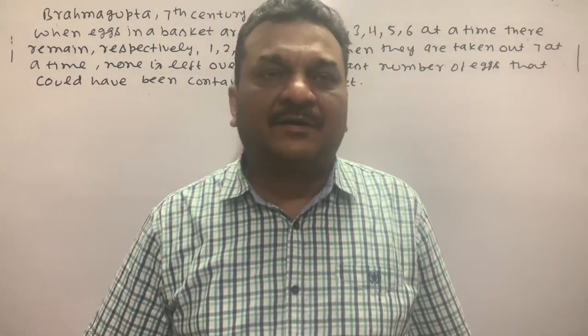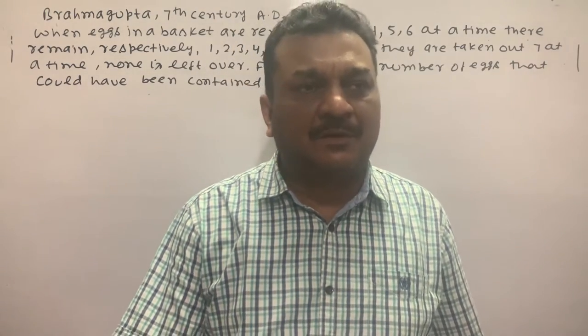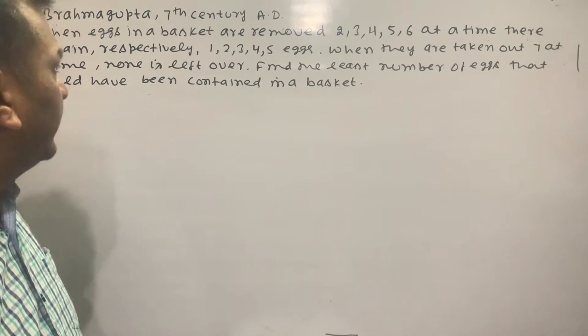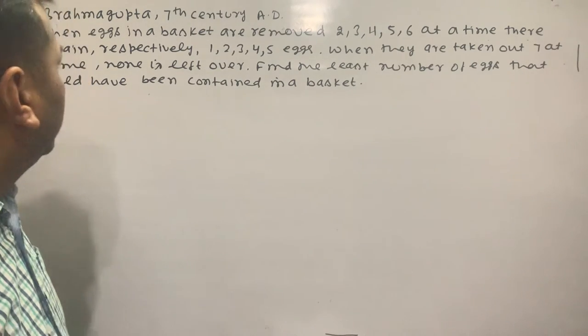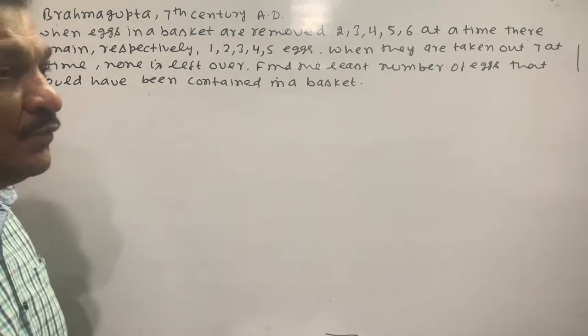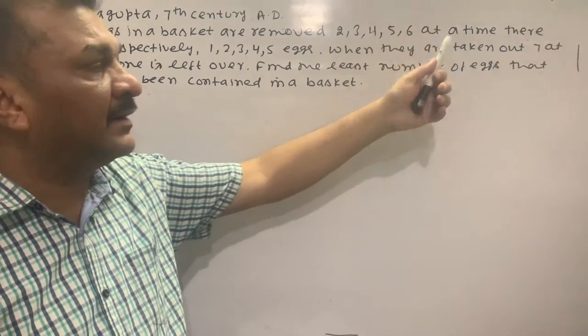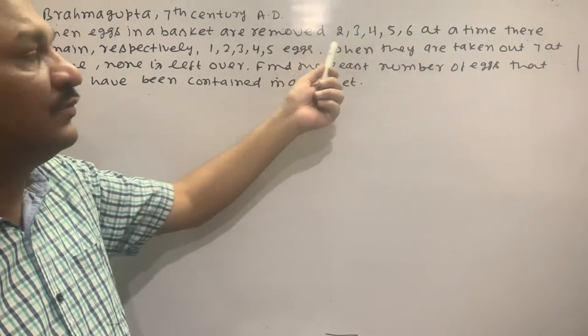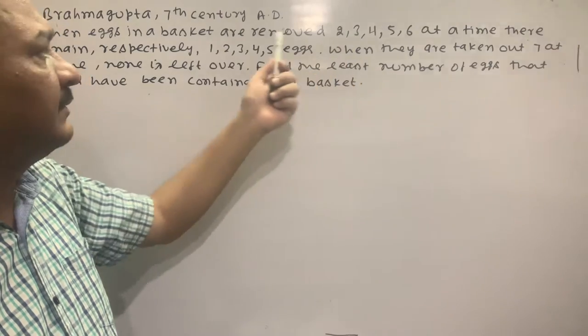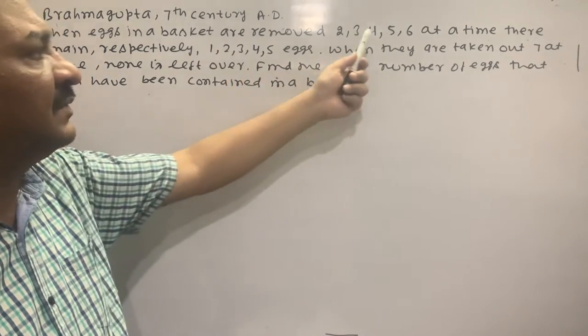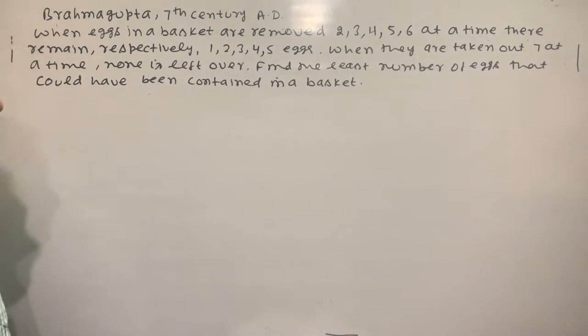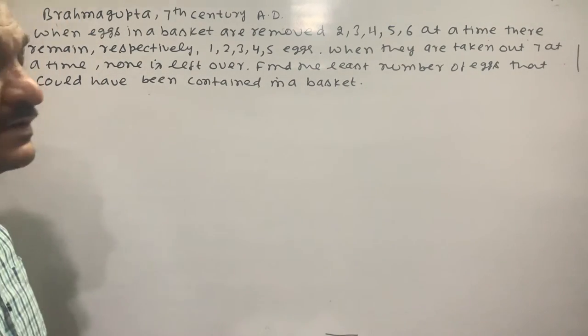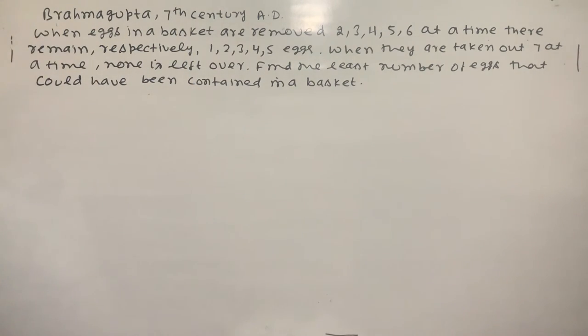Hello students, today an important example - Brahmagupta, 7th century AD problem. When x eggs in a basket are removed 2,3,4,5,6 at a time, they remain respectively 1,2,3,4,5 eggs. When they are taken out 7 at a time, none is left over. Find the least number of eggs that should have been contained in a basket.